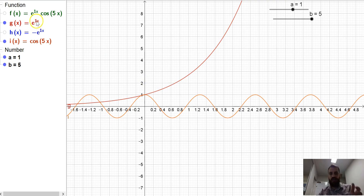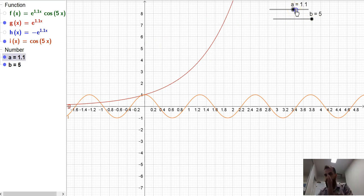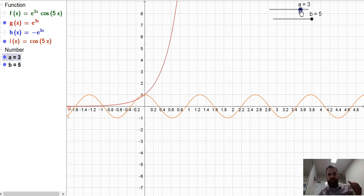Now, that's e to the 1x, so the a value in there is 1. Watch what happens if I change the a value more positive. We get a steeper function.